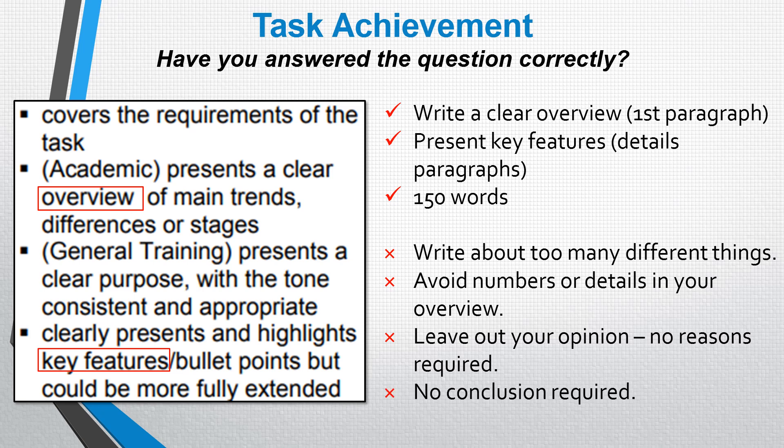You're also not going to write a conclusion in task 1 — it's not required. You've only got 150 to 200 words to write, and in a summary task like this, the overview is basically doing the same job as a conclusion would. So we would only be repeating the same information. We're simply going to focus on writing a clear overview in our first paragraph and therefore we don't need a conclusion. Those are the things you need to do and not do if you want to get a band 7 for task achievement.